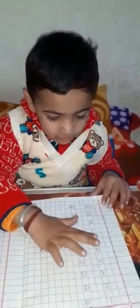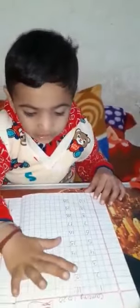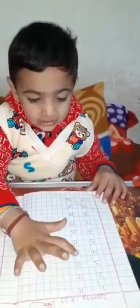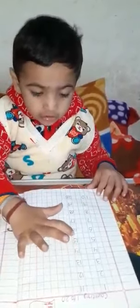I will now count from 1 to 20. 1, 2, 3, 4, 5, 6, 7, 8, 9, 10, 11, 12, 13, 14, 15, 17, 18, 19, 20.